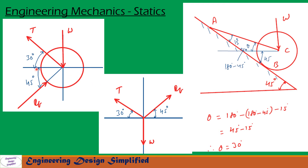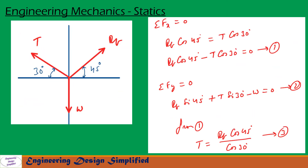Now let us transfer these forces and reactions to the XY plane. On the XY plane, weight W acts downwards. RB is shown at an angle of 45 degrees from the horizontal. Tension T is shown at an angle of 30 degrees from the horizontal. We are going to use the method of projections to solve this problem.